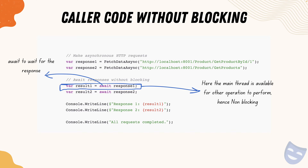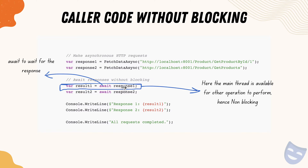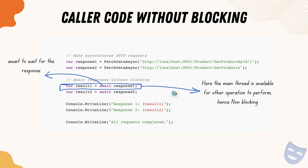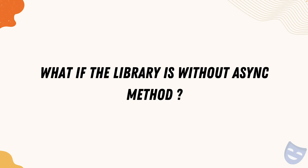But now what if the library is without an async method? We saw that HttpClient came as a savior by giving us an async method, but what if there is code which has no async method at all? What if our automation code that we are trying to write does not have an async method, while the code we have to write has to be async? How do we actually resolve this problem?